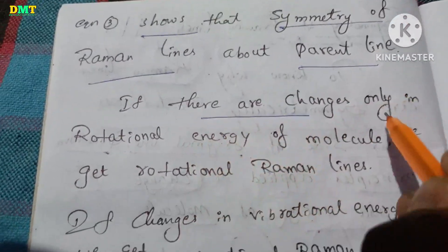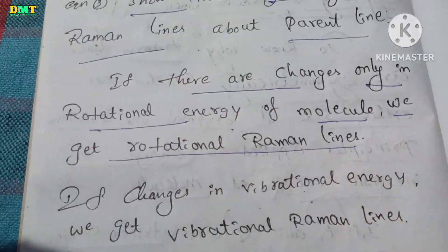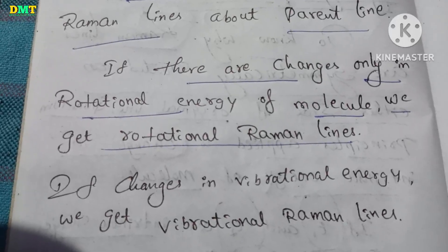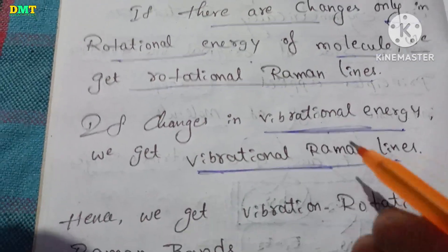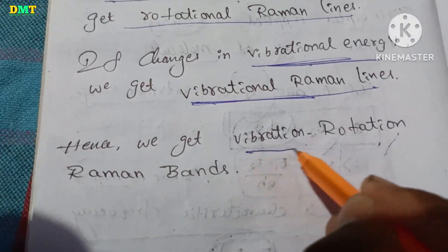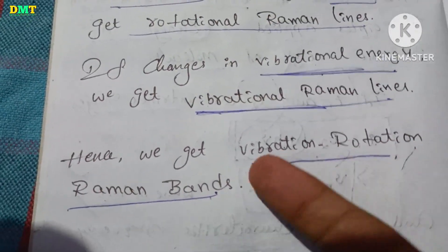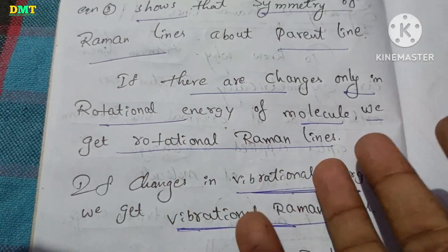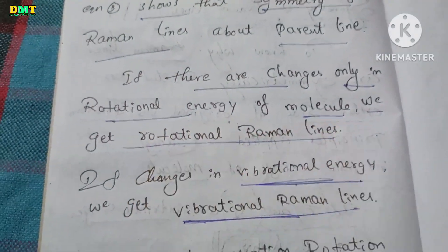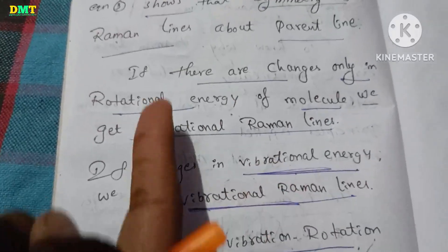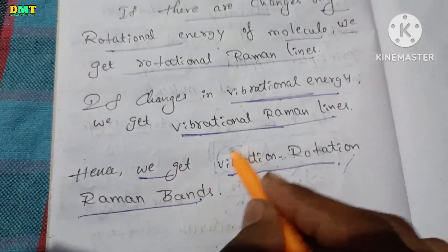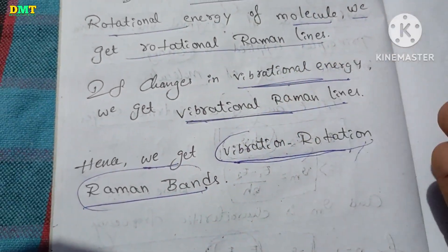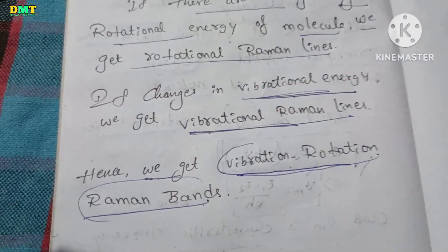If there are changes only in rotational energy of the molecule, we get rotational Raman lines. If there is a change in vibrational energy, we get vibrational Raman lines. If both rotational and vibrational energies change together, we get rotation-vibration Raman bands. This is the quantum theory of the Raman effect.